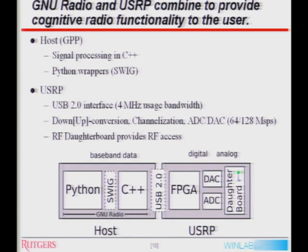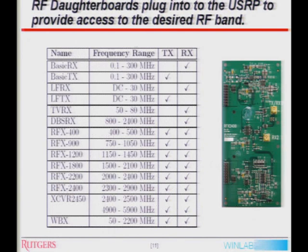Signal processing blocks are integrated with existing higher-layer coding frameworks such as Python to implement a user-desired signal processing function. The USRP itself is really the hardware interface to the outside world, providing RF access. Based upon its USB 2.0 interface to the host, the USRP is responsible for converting RF to IF to baseband data so that a user on the host can process baseband data and do whatever is needed.